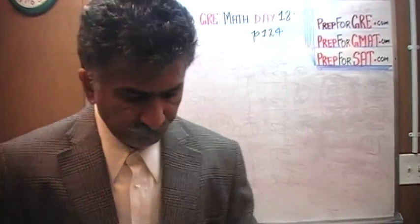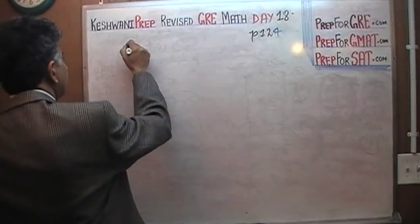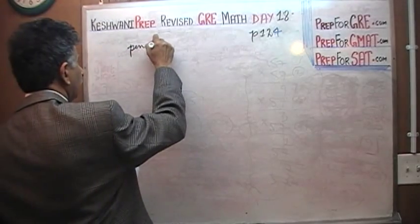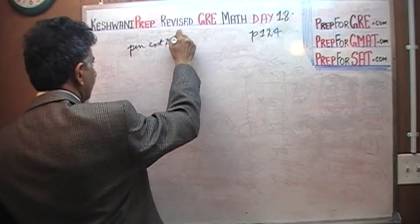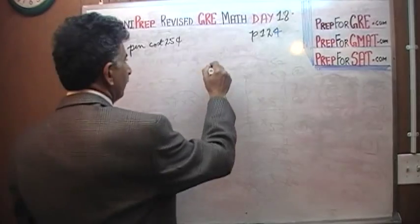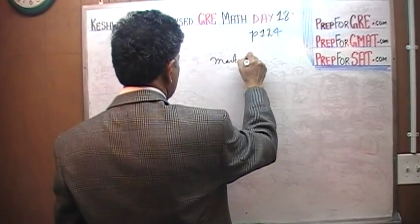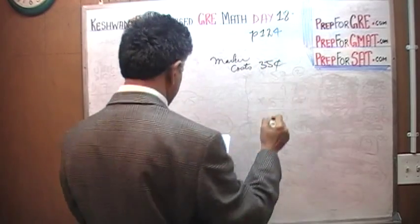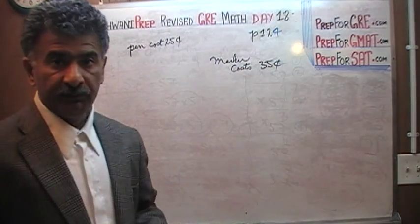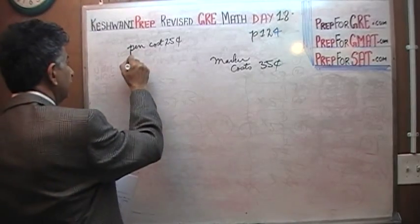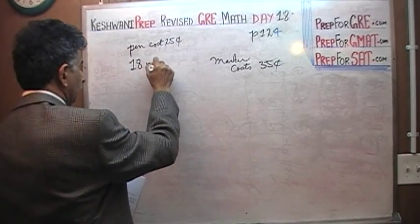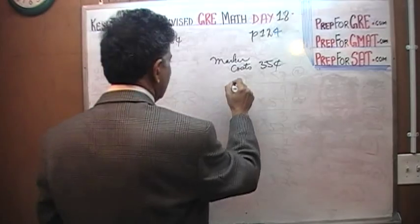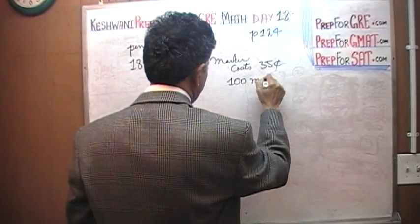Very simple straightforward problem. We are told that a pen costs 25 cents. We are told that a marker costs 35 cents. And the question simply is what's going to be the cost of 18 pens and 100 markers.